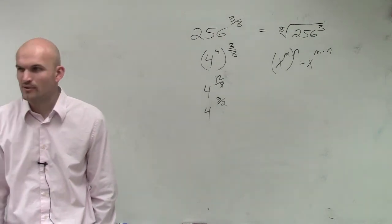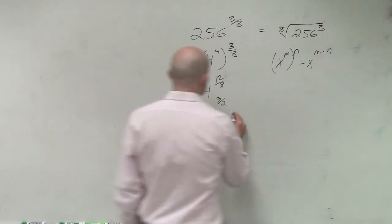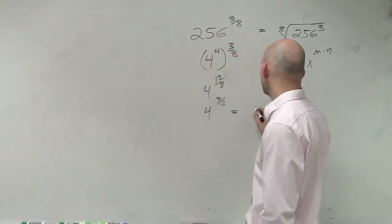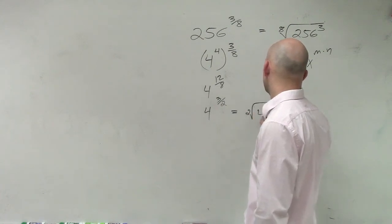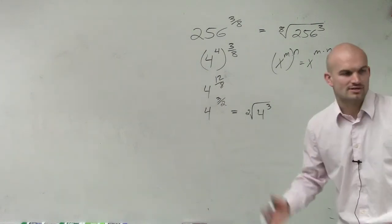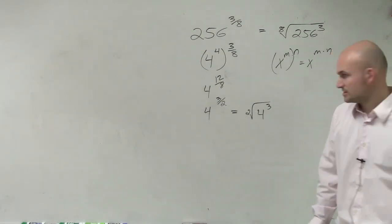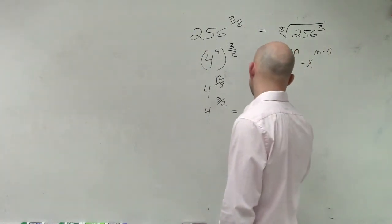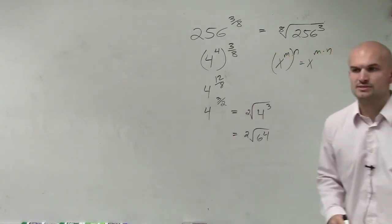Now, is it a little bit easier to evaluate this? Yeah. We can now replace this into the square root of 4 cubed. Well, what's 4 cubed? 4 times 4 times 4? 64. Do we know what the square root of 64 is? 8.